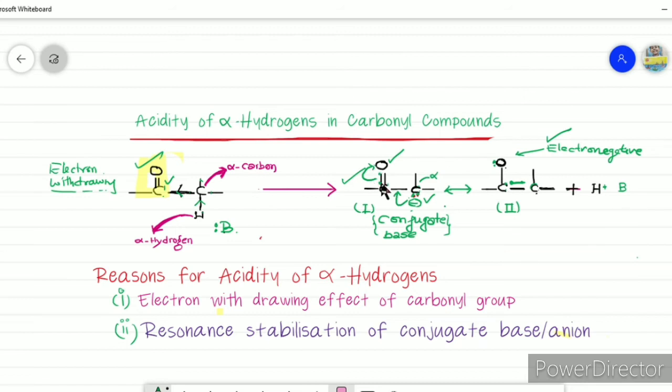Since oxygen has acquired one extra electron, oxygen now has the negative charge. Oxygen is more electronegative as compared to carbon, so this oxygen can tolerate this negative charge. Structure number two is more stable than structure number one.